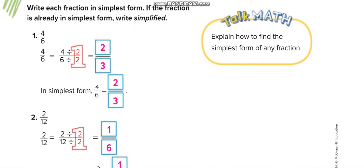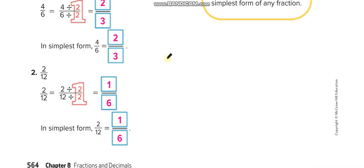This one now, here 4 over 6, they divide by 2, 2 up and 2 down. So 4 divide 2 is 2 and 6 divide 2 is 3. And similarly, this question number, 2 over 12, we can divide by 2, so 1 over 6.